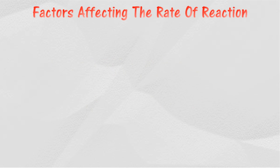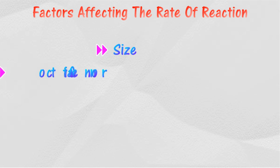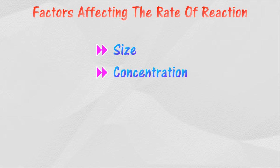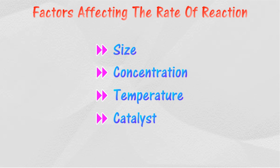There are five factors affecting the rate of reaction: size of the reactants or the total surface area of the reactant, concentration of the reactants, temperature of the reaction, presence of catalyst, and application of pressure.